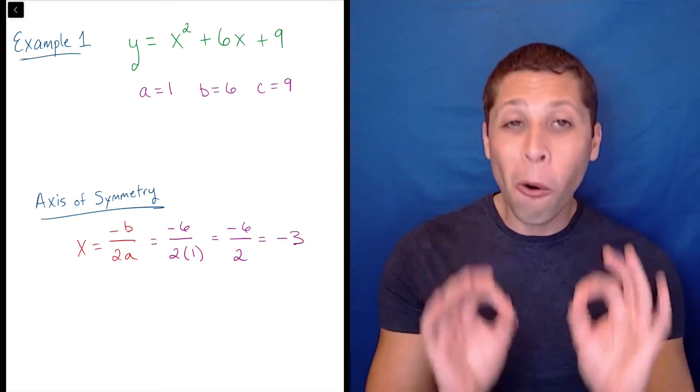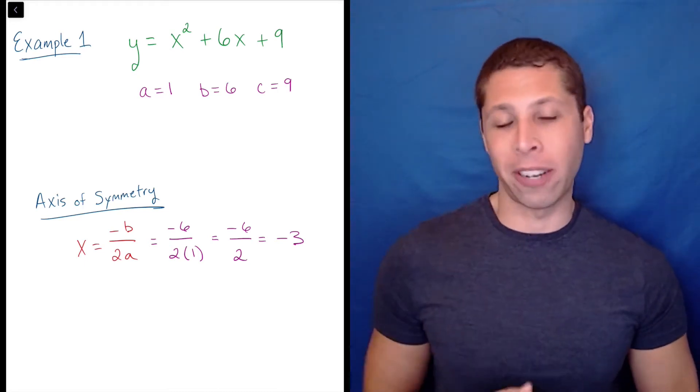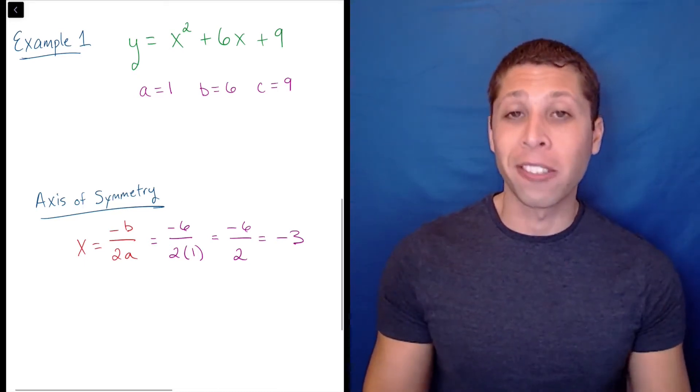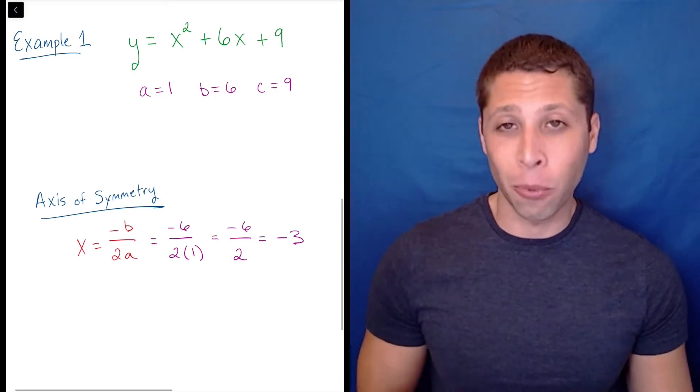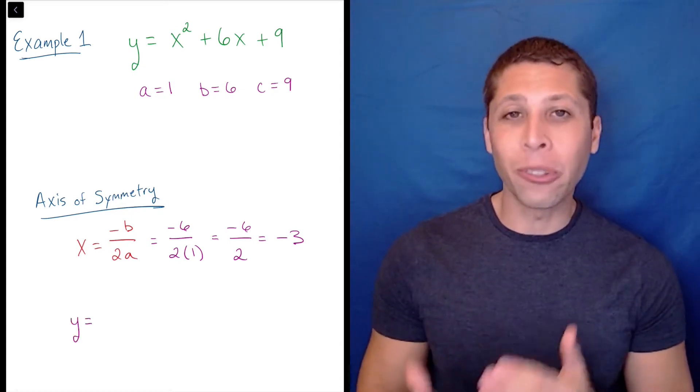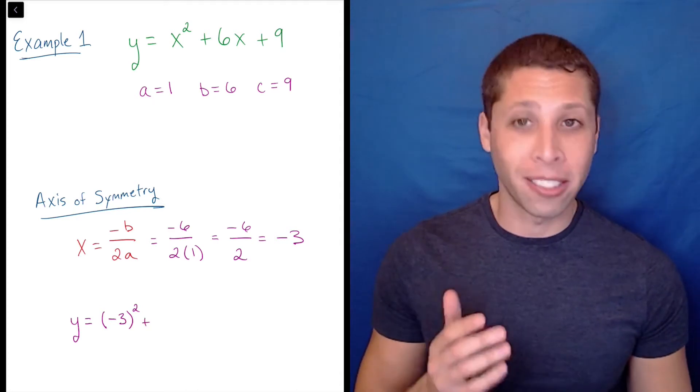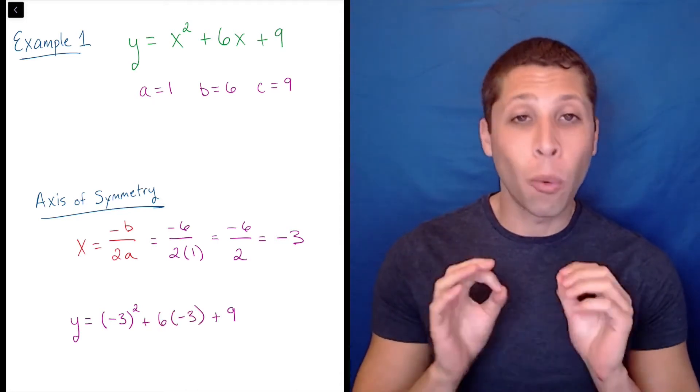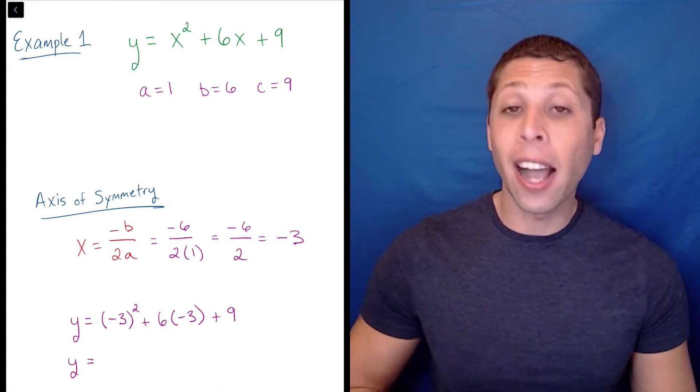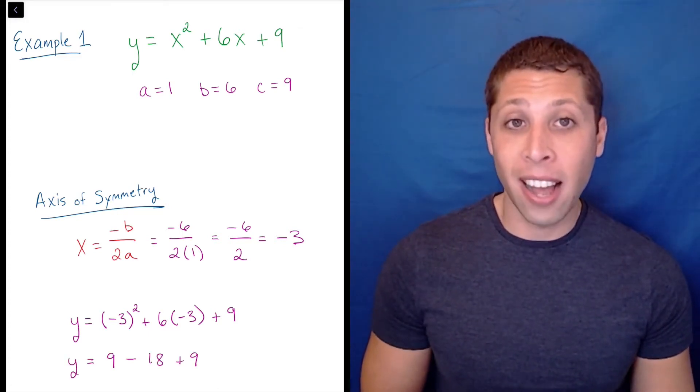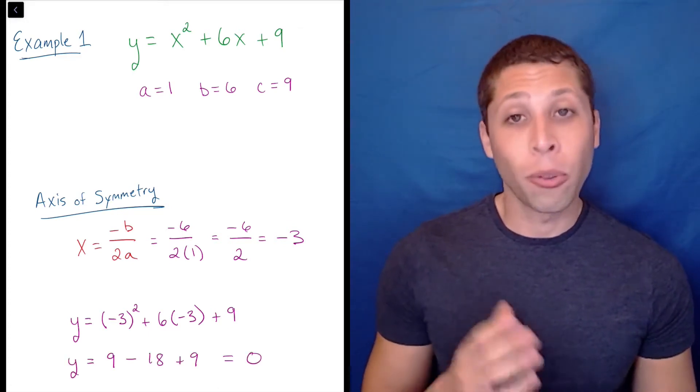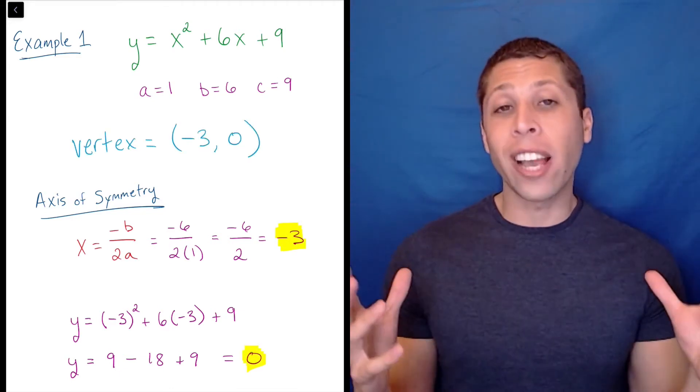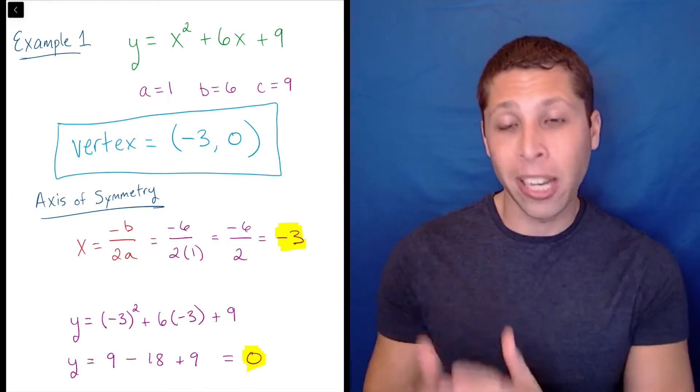But this only gives us the x coordinate of the vertex. To find the y coordinate, do what you always do with equations: plug in x and solve for y. y equals negative 3 squared plus 6 times negative 3 plus 9. Simplify one step at a time: 9 minus 18 plus 9 equals 0. So the y coordinate of the vertex is 0, and so the whole vertex is the point negative 3, 0.